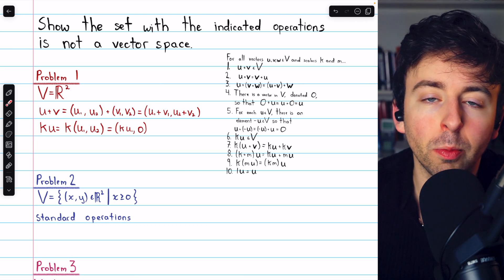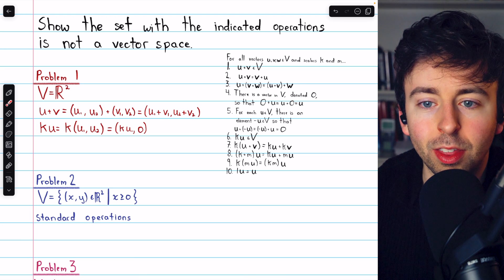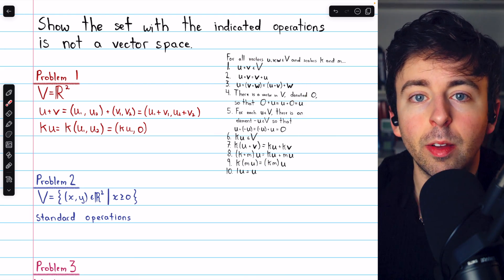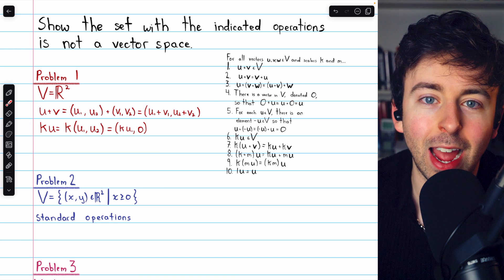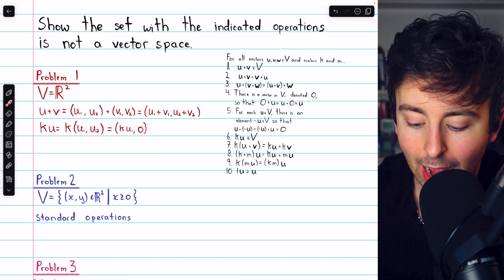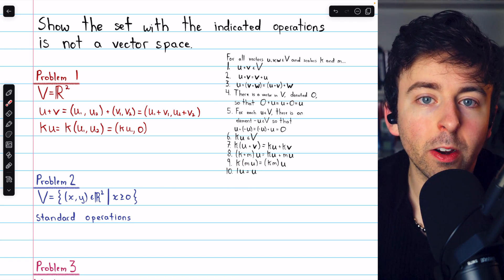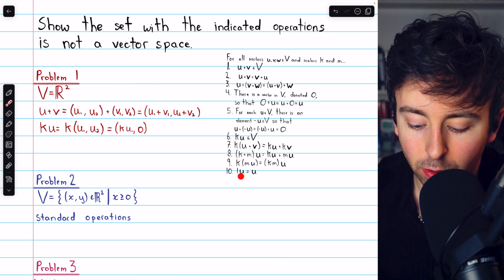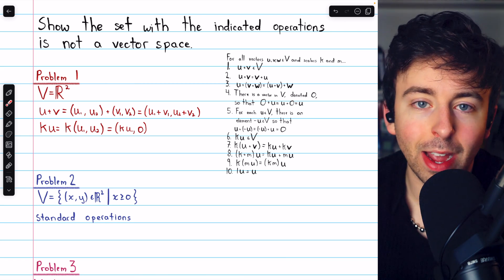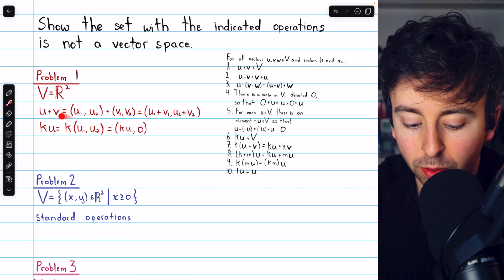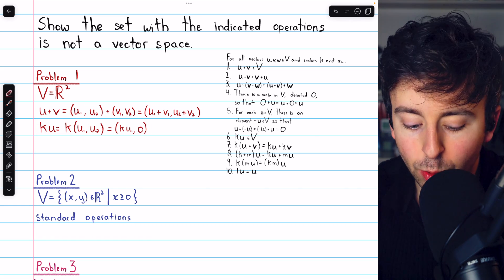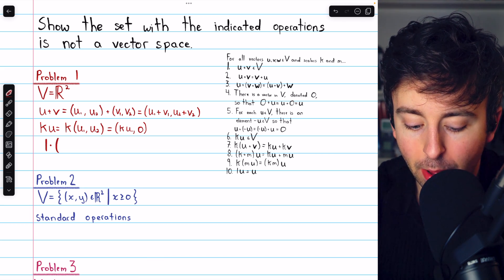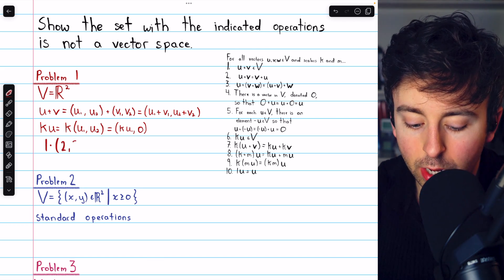This is a weird definition of scalar multiplication, so when we try to think of what vector space axiom this might violate, we of course will look to the scalar multiplication axioms. In particular, axiom ten requires that multiplying any vector by the scalar one doesn't change the vector. By the definition of scalar multiplication here, that is clearly not the case.